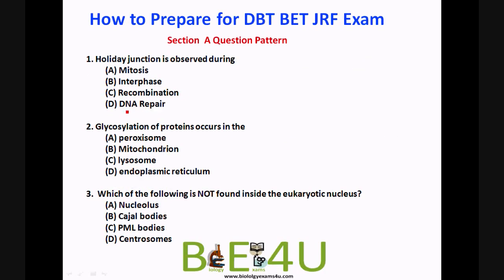The second question: glycosylation of proteins occurs where? Glycosylation is a post-translational modification of proteins. Peroxisome, mitochondria, and lysosome are not sites where post-translational modification takes place. Endoplasmic reticulum is the site where post-translational modification takes place.